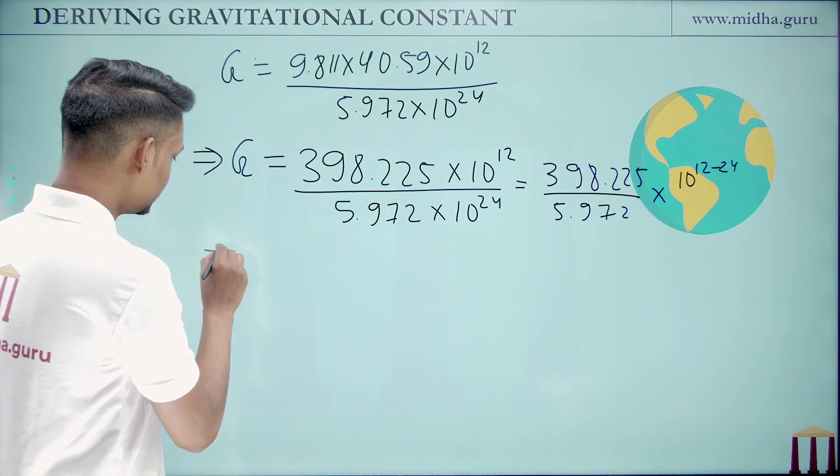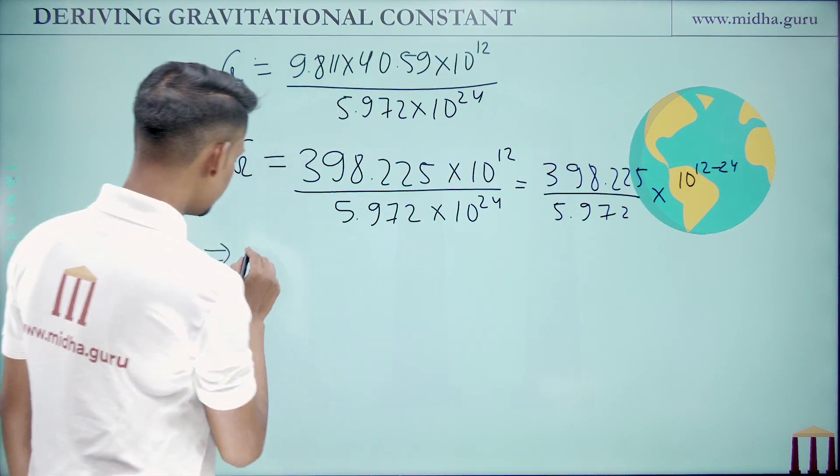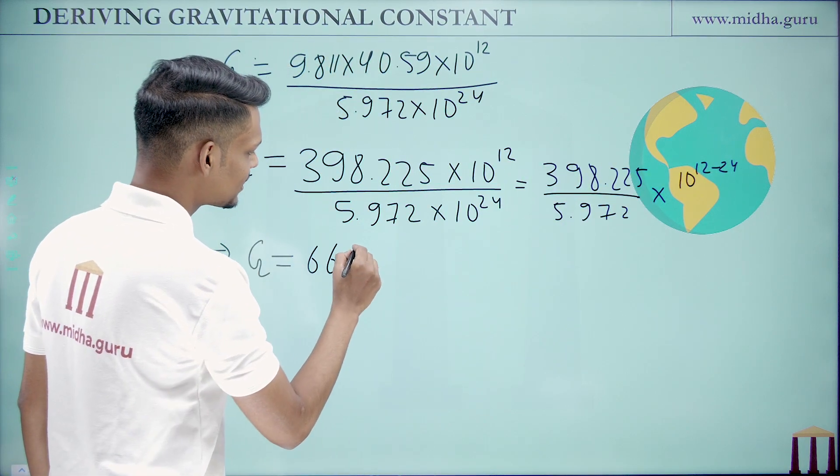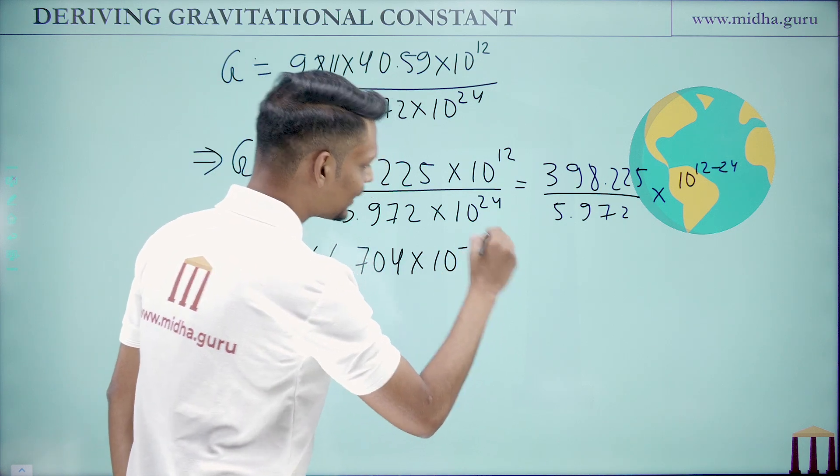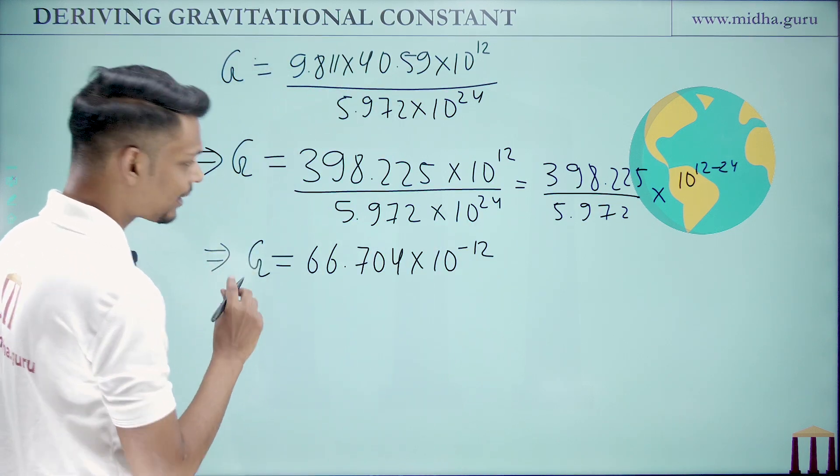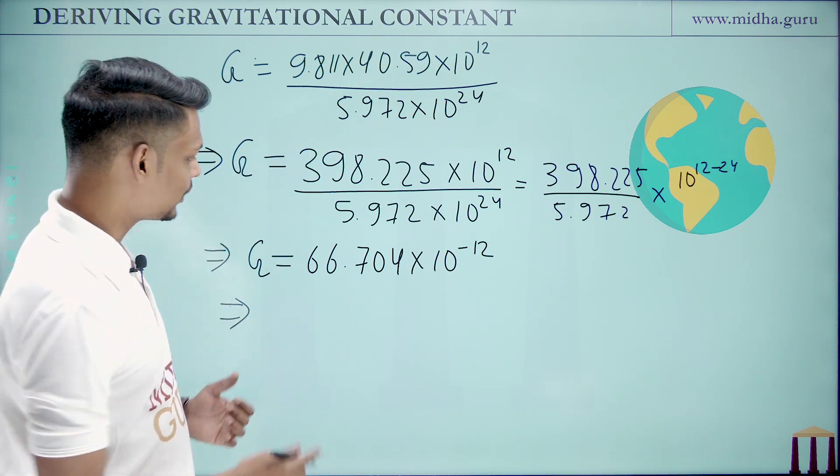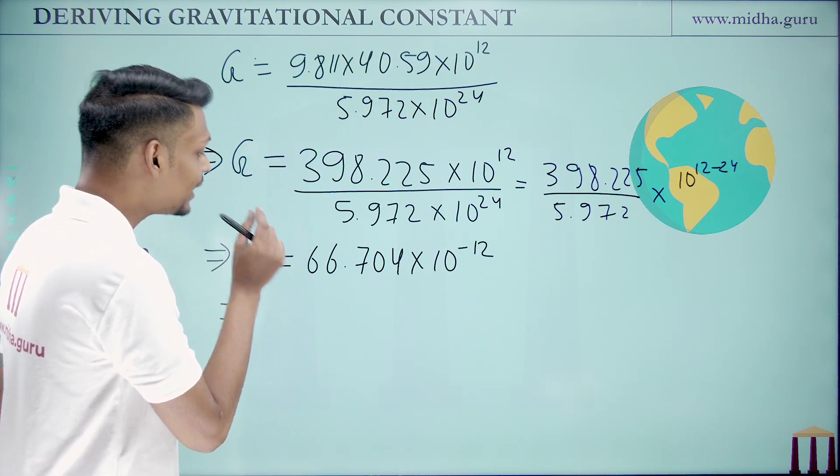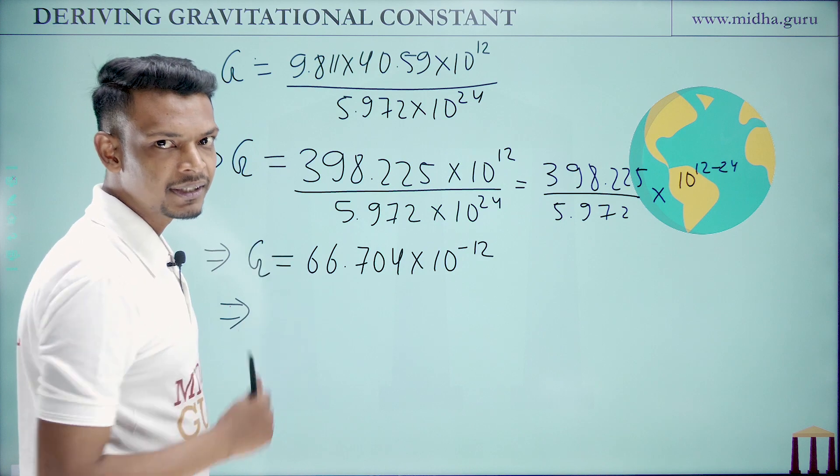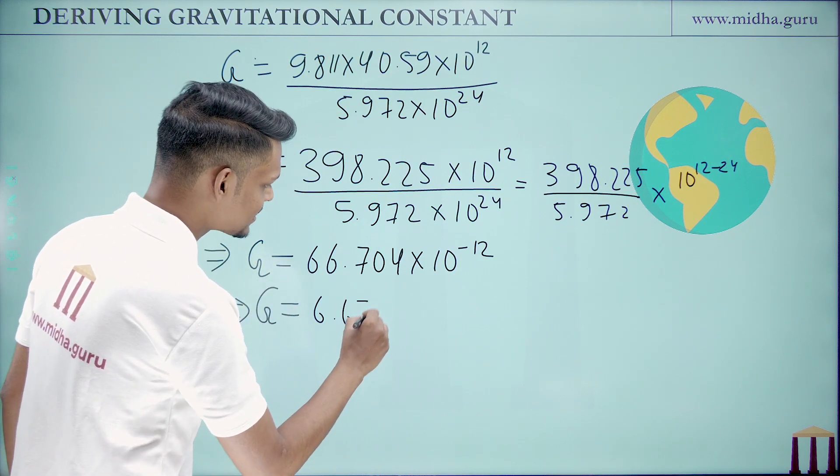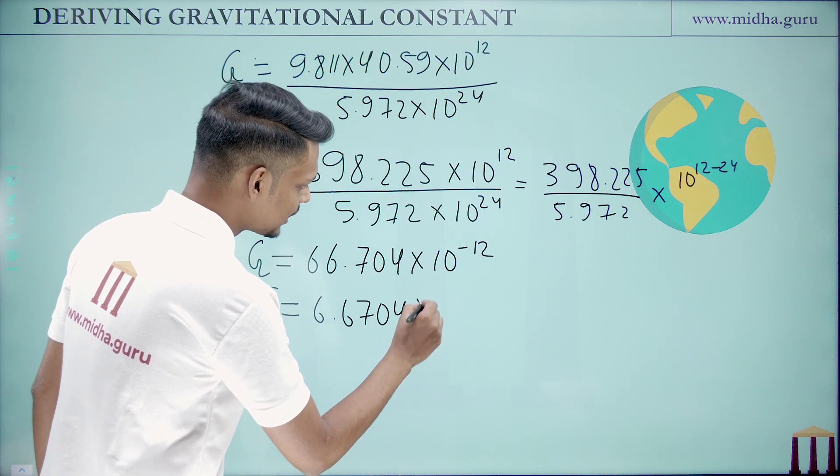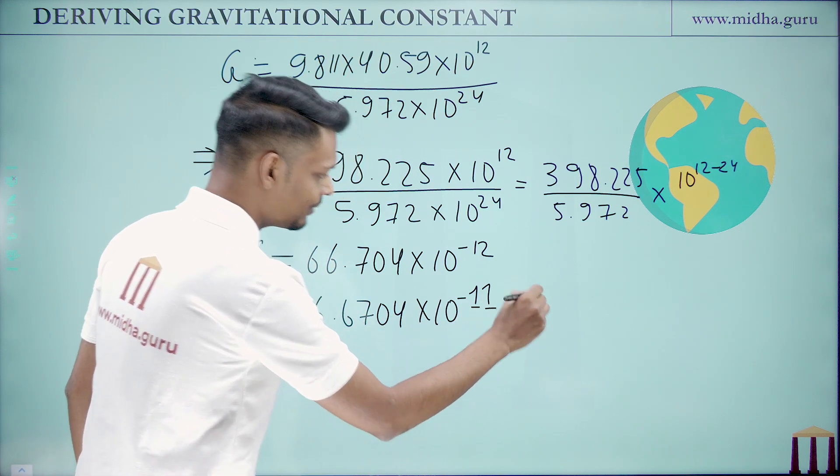Next when we simplify this value we will get the value of G as 66.704 times 10 to the power of minus 12, which if we are writing it in scientific notation we know that we should have only one integer number and rest should be the decimal. So we can write G as 6.6704 times 10 to the power of minus 11.